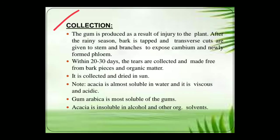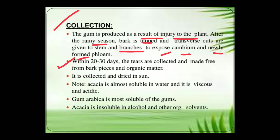The collection of the gum: it is produced as a result of injury to the plant after the rainy season. Bark is tapped and transverse cuts are given to the stem and branches to expose the cambium and newly formed phloem. Within 20 to 30 days the tears are collected and made free from bark, species, and organic matter. It is an unorganized drug, collected and dried in the sun.